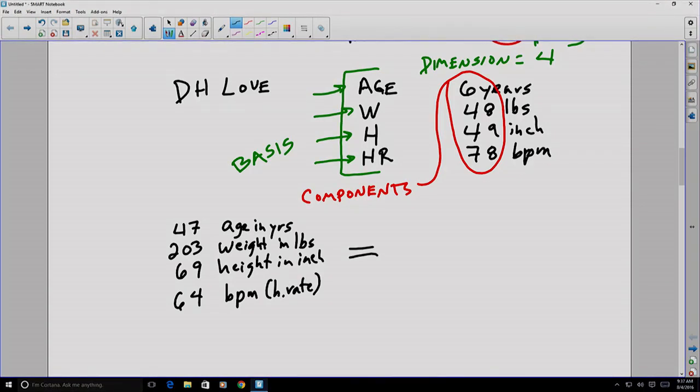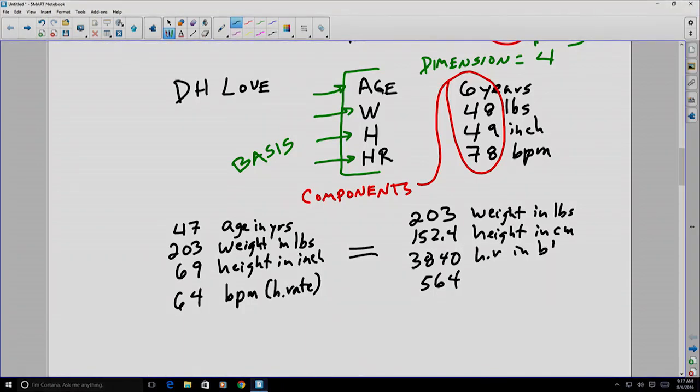However, if we took that information, we could have the same information reorganized. First, consider this vector. In this case, the weight in pounds is listed first. The height is listed second, but it's now listed in centimeters. The heart rate is now listed in beats per hour, which is a strange number, but we'll use it in this case. And the age is listed in months.